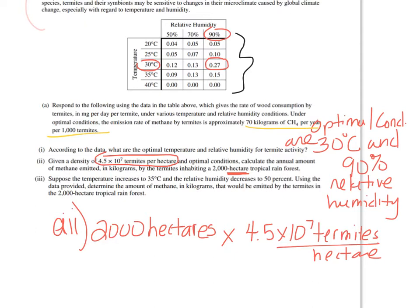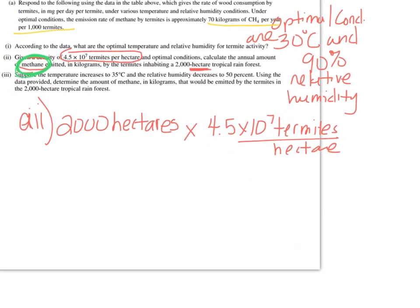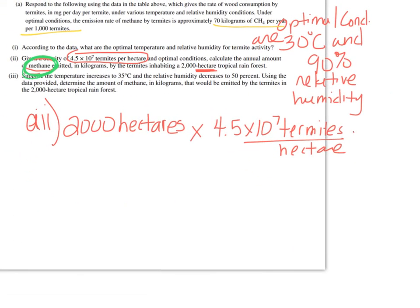So how did I start this problem? Well, first I just started by writing down some of the givens. And then when you set it up horizontally and you can see what can cancel, it's a lot easier to solve. You also want to figure out what are they asking you. They want methane emitted. So your answer should come out as methane emitted. So when I set up this problem, I've got to get to the end where everything cancels except for methane.